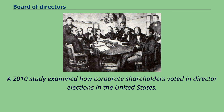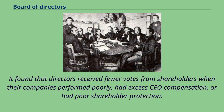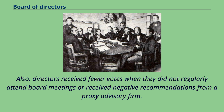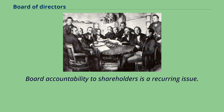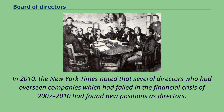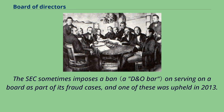A 2010 study examined how corporate shareholders voted in director elections in the United States. It found that directors received fewer votes from shareholders when their companies performed poorly, had excess CEO compensation, or had poor shareholder protection. Also, directors received fewer votes when they did not regularly attend board meetings or received negative recommendations from a proxy advisory firm. The study also shows that companies often improve their corporate governance by removing poison pills or classified boards and by reducing excessive CEO pay after their directors receive low shareholder support. Board accountability to shareholders is a recurring issue. In 2010, the New York Times noted that several directors who had overseen companies which failed in the financial crisis of 2007-2010 had found new positions as directors. The SEC sometimes imposes a ban on serving on a board as part of its fraud cases.